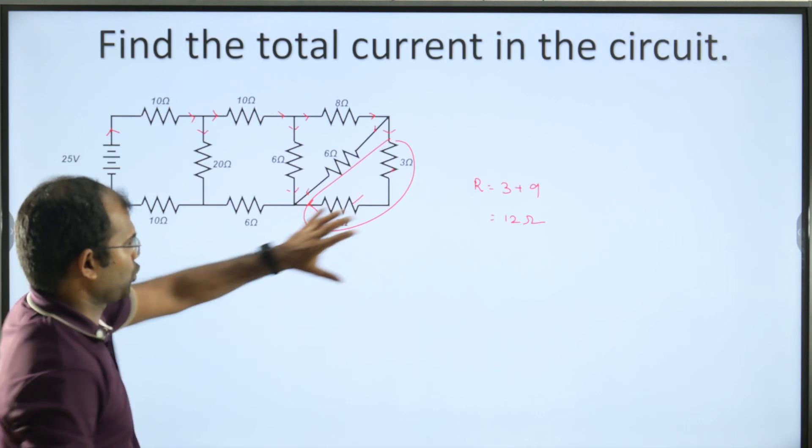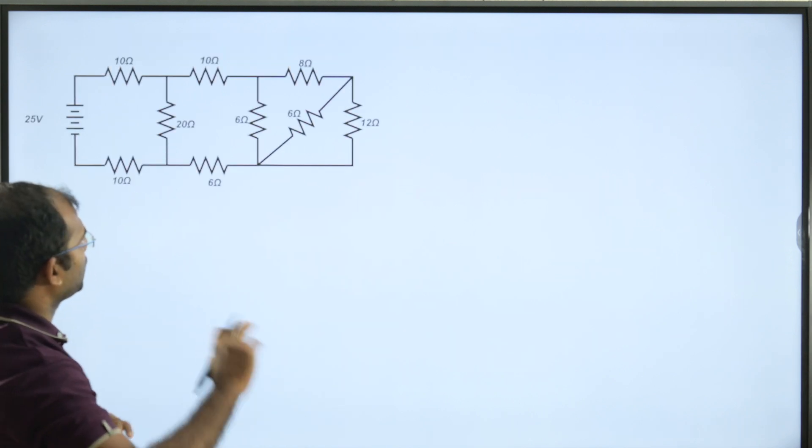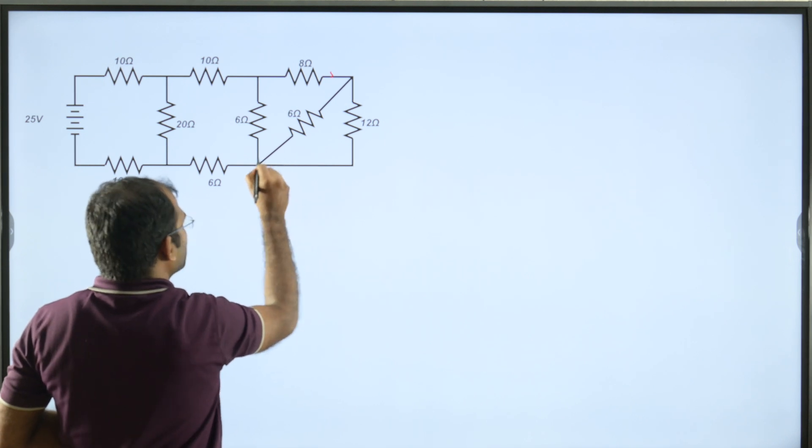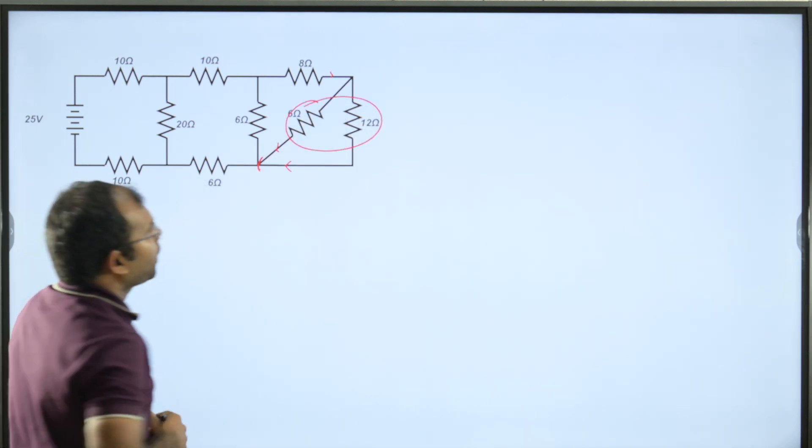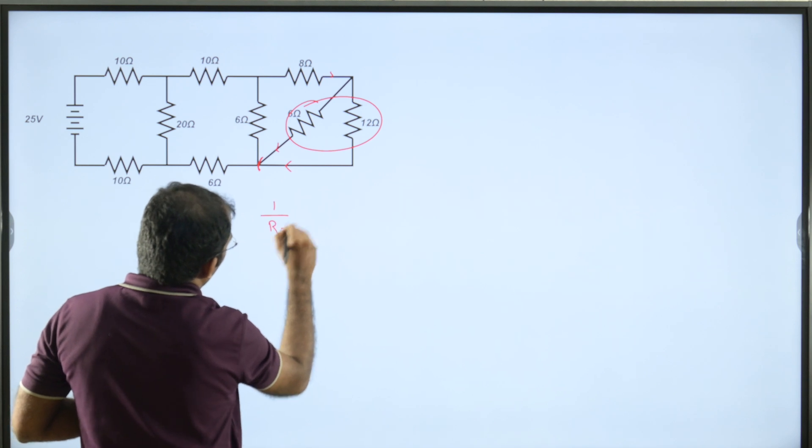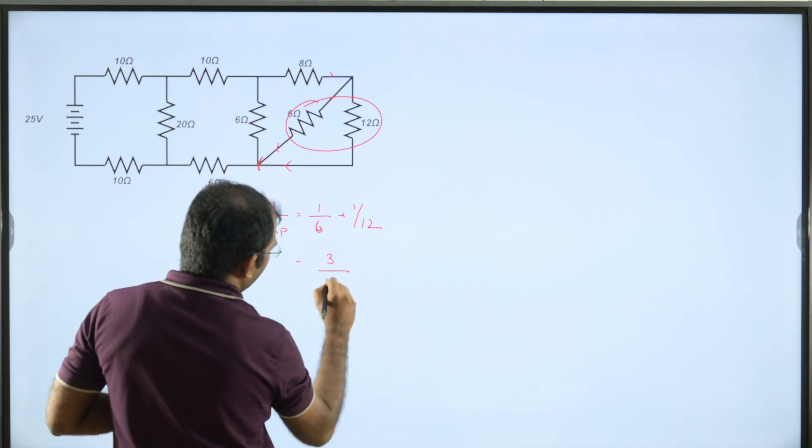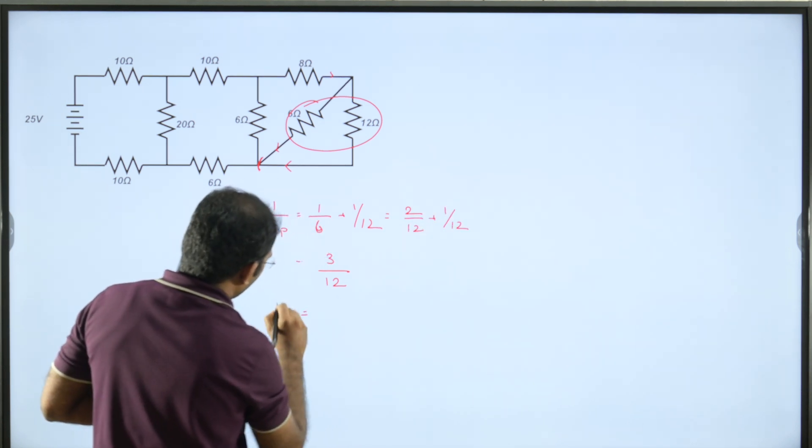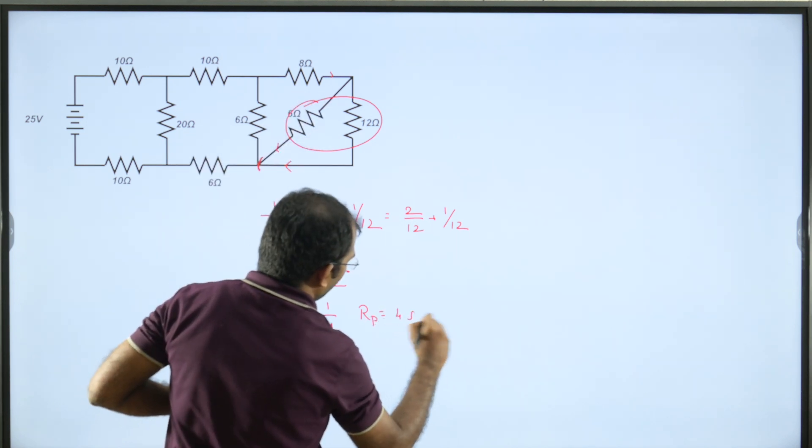Now we're going to make the equivalent circuit. The 12 ohms resistance is the replacement. Now, where current divides, two networks are in parallel. 1 by Rp equals 1 by 12 plus 1 by 12, which equals 3 by 12. Therefore, 1 by Rp equals 1 by 4, so Rp equals 4 ohms. The equivalent resistance of these two is 4 ohms.